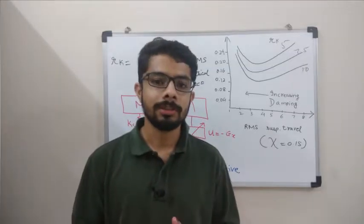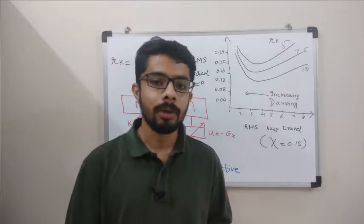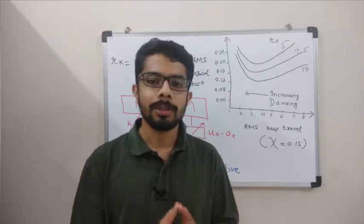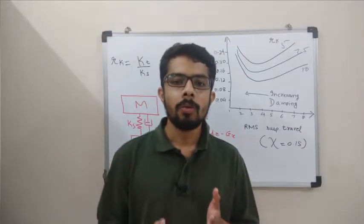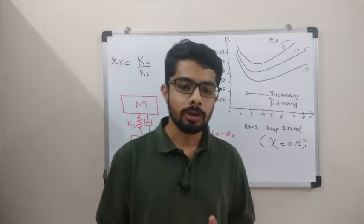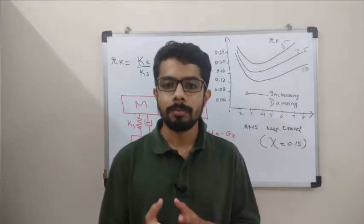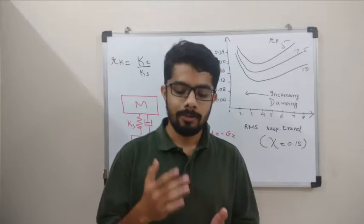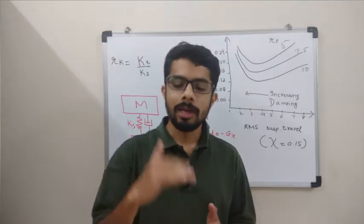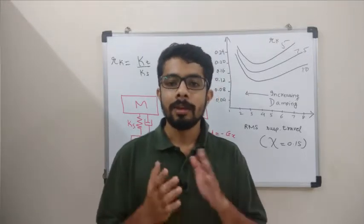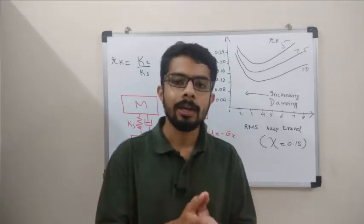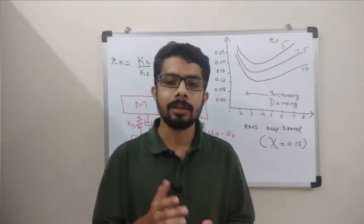In the previous video we talked about the suspension system without taking the damping effect into consideration. But in practical cases, damping is always present in the suspension system. This damping is done by the shock absorbers. The name suggests they absorb the shock, but in actual cases when a vehicle falls into a pit or faces a bump, there are oscillations in the suspension system that are damped by those shock absorbers. They do not absorb the shock directly but damp the oscillations, decreasing the frequency of oscillations of the vehicle.